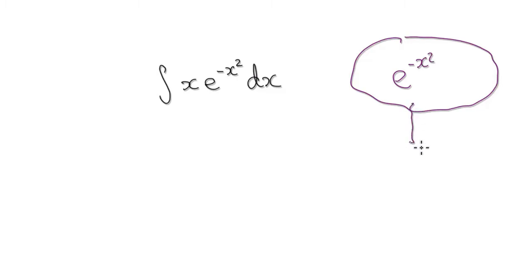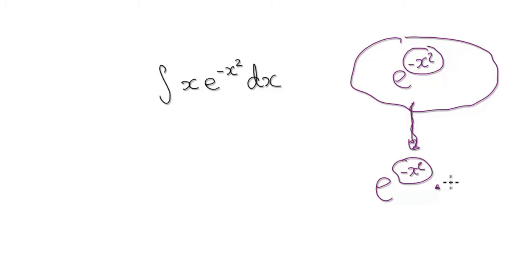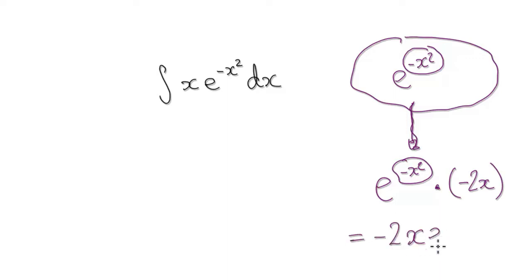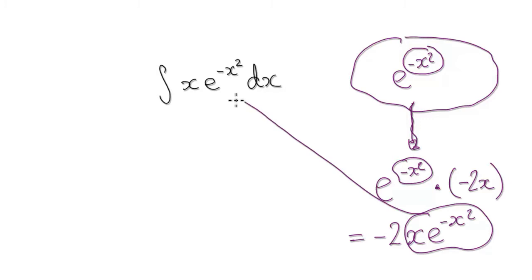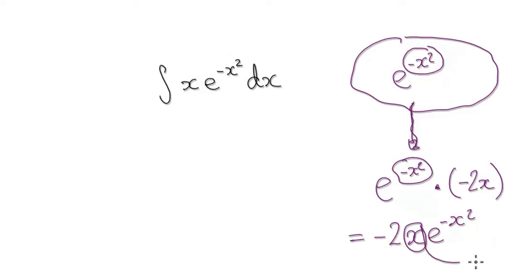So now, when you differentiate this — imagine this as being a bubble — when you differentiate e to the power of the bubble, it would be e to the power of the bubble times the derivative of the bubble itself, which would be minus 2x. When you tidy this up, it gives you x · e to the minus x squared. And look — this thing here is exactly the same as this. Notice that x is a derivative of x squared.